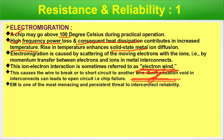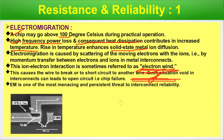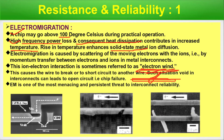Electromigration is one of the most menacing and persistent threats to interconnect reliability. In the diagram, you can see a void in a via — if the displaced material moves further it will touch the adjacent wire creating a short circuit. The dark area is inter-metal dielectric, and the electromigration process is displacing it. In one case it creates an open circuit, and in another almost a short circuit. In both cases the chip will fail.